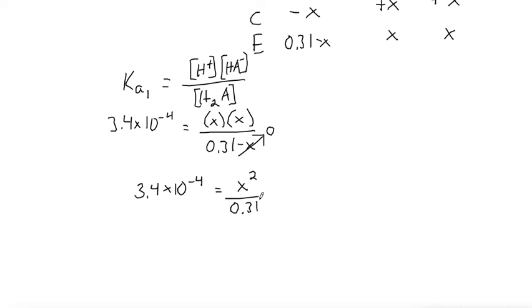Solving for x, multiply both sides by 0.31. So 3.4 times 10^-4 times 0.31 is 0.0001054 equals x². Square root both sides and that makes 0.0103 equals x.